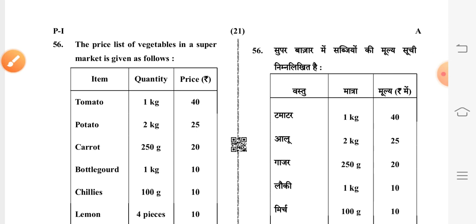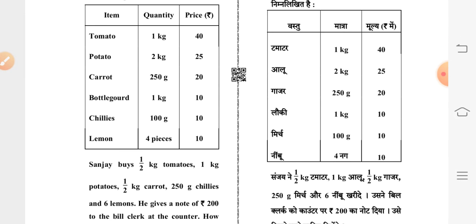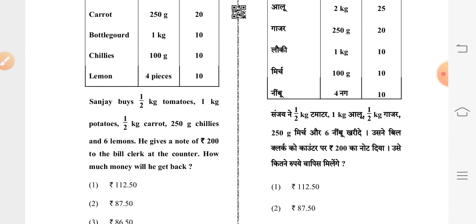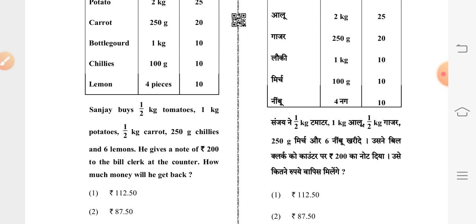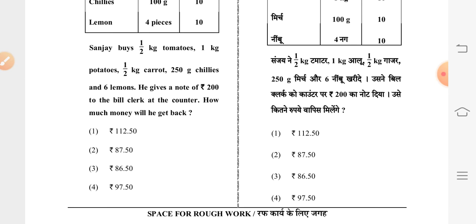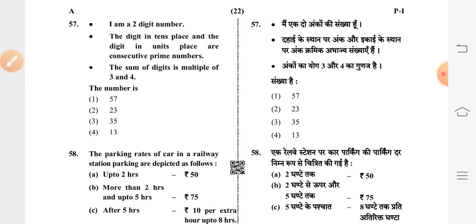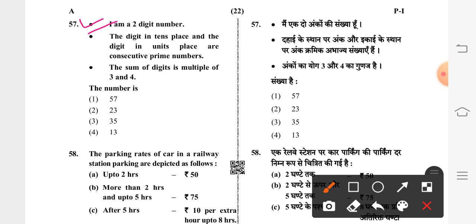Question 56: Sanjay buys half kg tomatoes, 1 kg potatoes, half kg carrot, 250 grams chillies, and 6 lemons. He gives a 200-rupee note — second option is correct for the change. Question 57: I am a two-digit number; the digits in tens place and units place are consecutive prime numbers; the sum of digits is a multiple of three and four — first option is correct: 57.